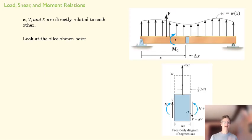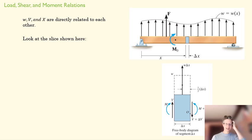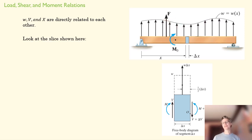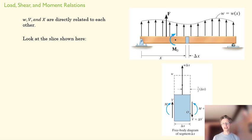It turns out that w, v, and x are all directly related to each other. We can start to see why if we look at a slice. I'm going to take this very generalized simply supported beam — it's got this complex loading because the analysis we're doing will fit for just about any kind of loading.